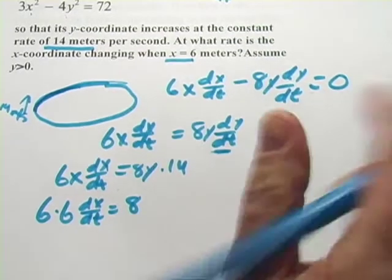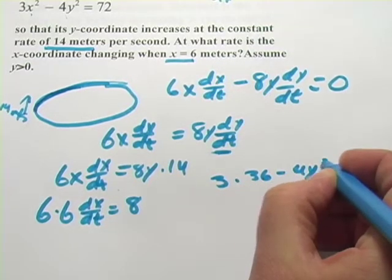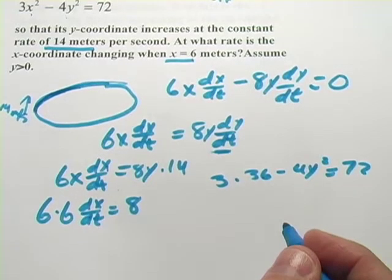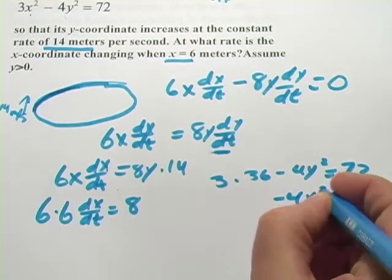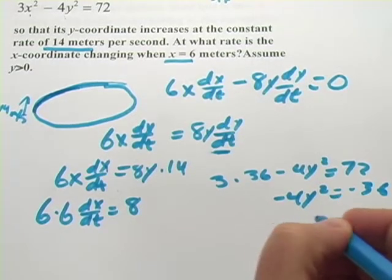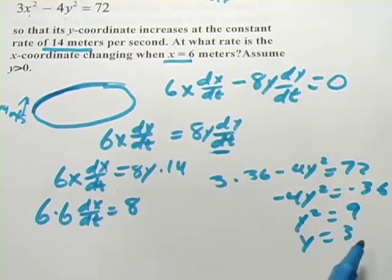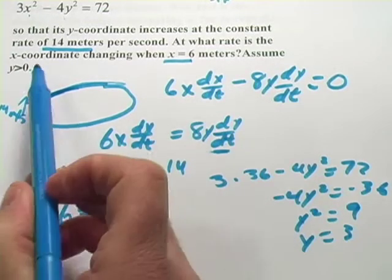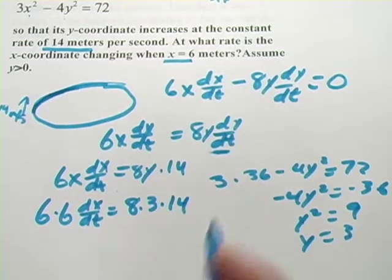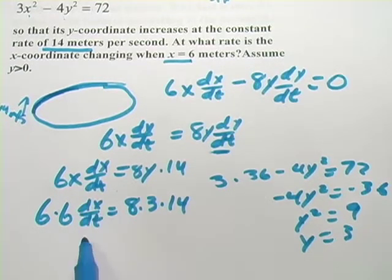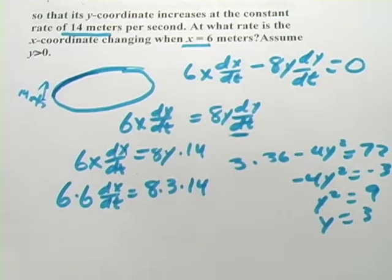I would have 3 times 6 squared, which is 36, minus 4y squared equals 72. And let's see. So, oh, that's 2 36s. And if I subtract 3 36s, this would be negative 4y squared equals negative 36, divided by negative 4. I get y squared equals 9. And we'll take the square root of both sides, and we get y equals 3. We don't have to worry about the negative 3 from taking the square root, because we've been told to assume that y is greater than 0. So I've got 3 for my y value. So instead of 8y, this is 8 times 3 times 14. And I've filled in everything in this equation except dx dt. That's the rate of change of x. That's what we want to find. So I can just go ahead and crunch the numbers now and solve this.